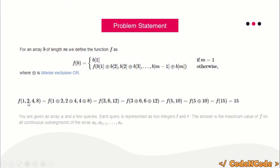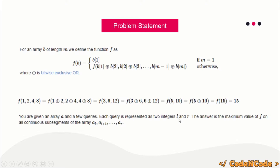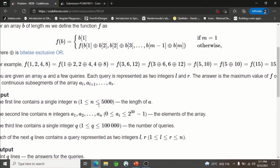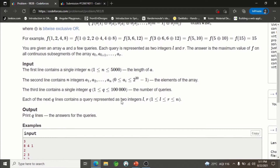We are given an array and q queries. In each query you are given l and r, and you have to find the maximum value of f on any possible contiguous subarray within that range. The number of queries is 10^5 and the number of elements is only 5000.